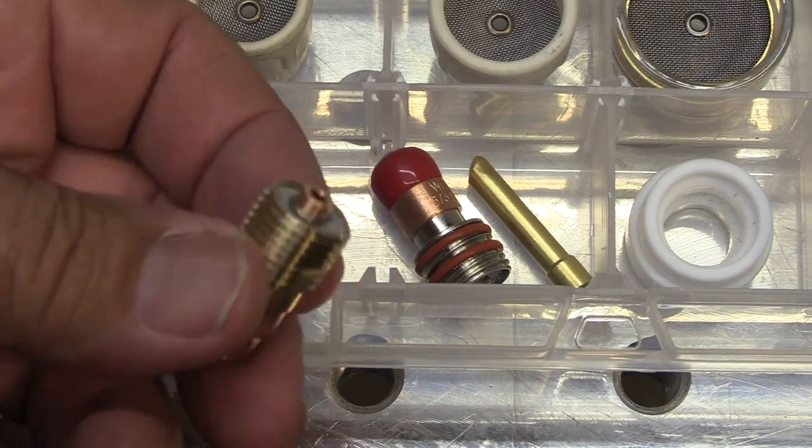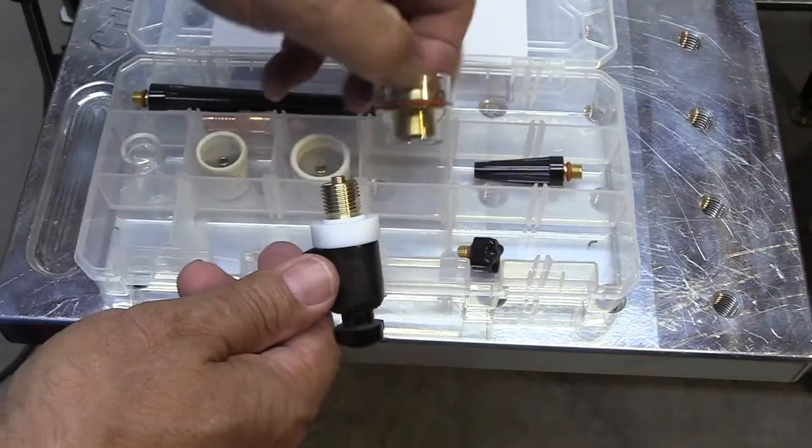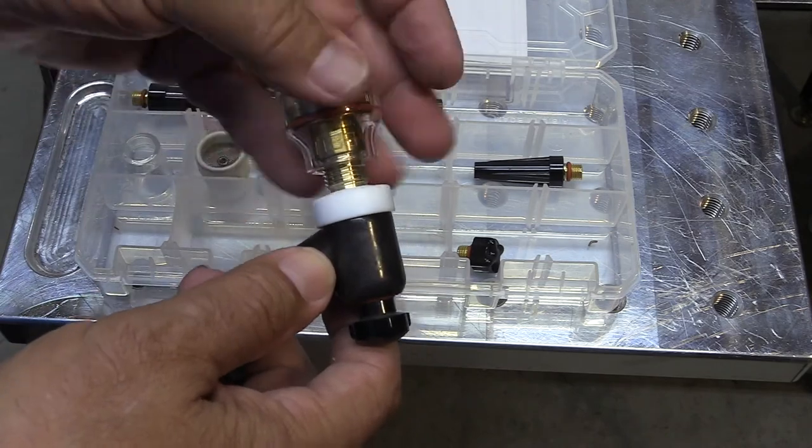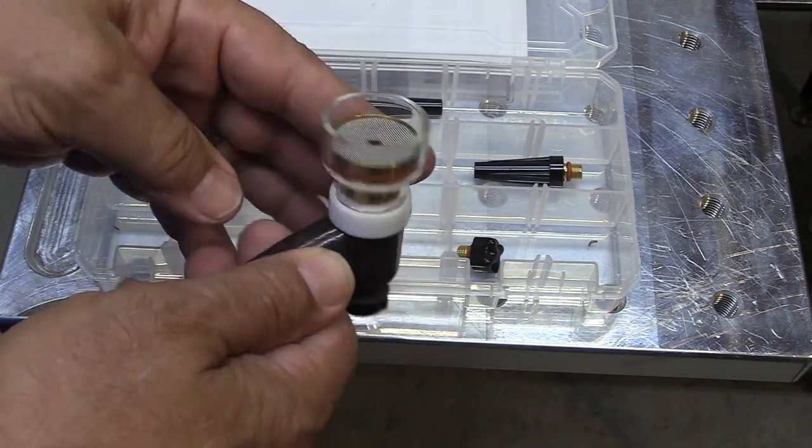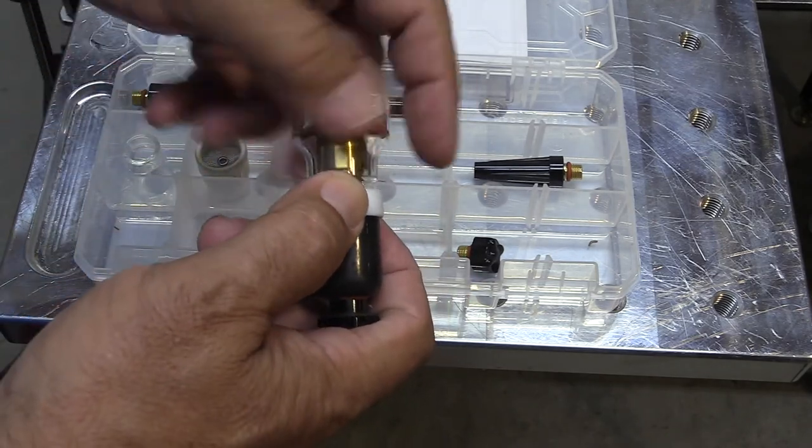Also included this CK stubby collet body. And that works best with all the rest of them. They just slide on there. That way you don't have to remove O-rings, take them off and put them back on when using the different cups.